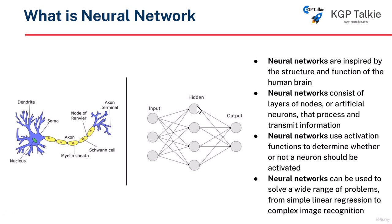You see, if there is a neuron, this neuron is actually like these things, and these lines which you are seeing — this is passing a signal from one neuron to another neuron.